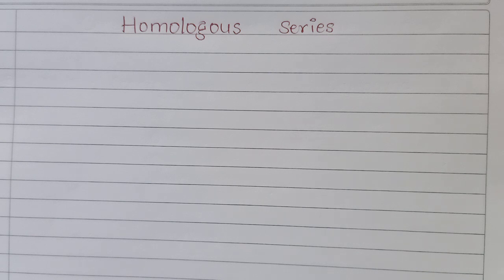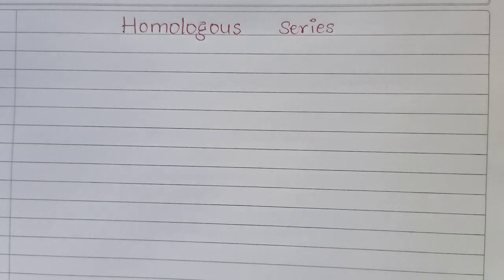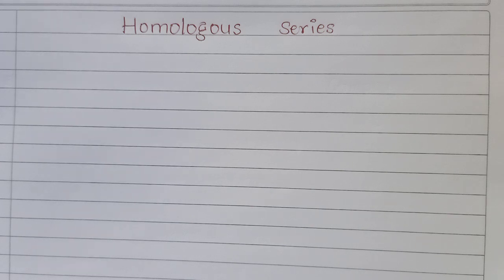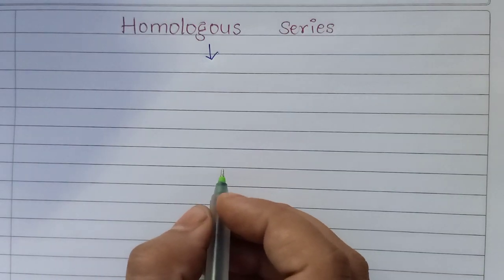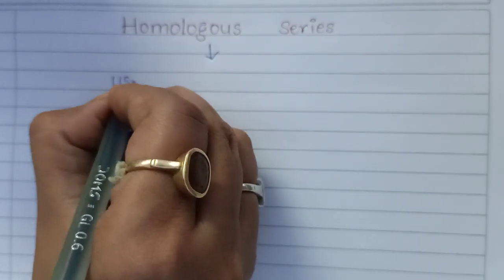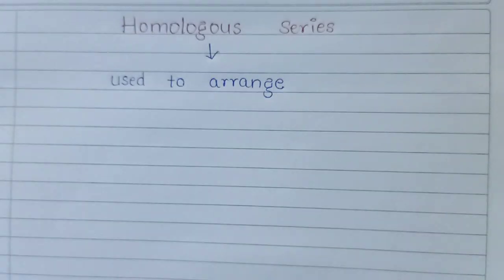The homologous series is a series which is used to define or arrange the members of a family in order to increase their molecular weight. In other words, when the members of a family are arranged in the order of increasing molecular weight, we get a series known as homologous series.